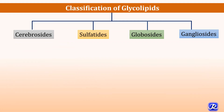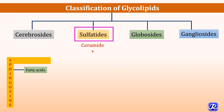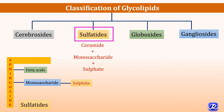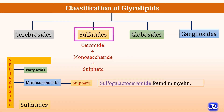The second class of glycolipids is sulfatides. It is composed of ceramide — which is sphingosine plus fatty acids — plus monosaccharide plus a sulfate group. Ceramide with monosaccharide along with the sulfate group is called as sulfatides. Sulfogalactocerebroside is found in myelin, which is an example of a sulfatide.